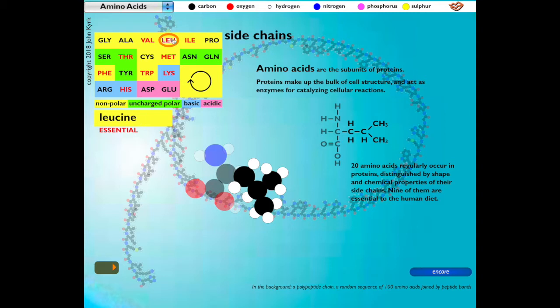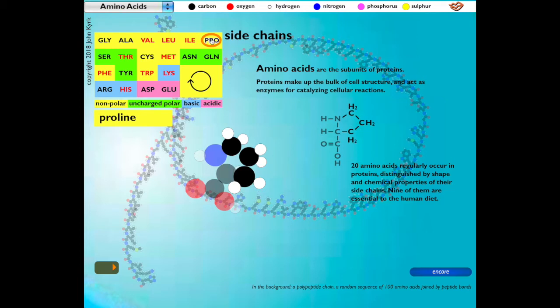Nine of the amino acids, the ones marked in red letters, are essential to the human diet. These are valine, leucine, isoleucine, threonine, methionine, phenylalanine, tryptophan, lysine, and histidine.